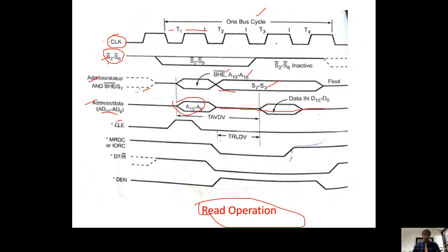ALE is important — ALE should be high during the first part of the machine cycle, i.e., during T1 time, and low for the remaining part. ALE is used along with latches to separate the multiplexed lines into pure address lines, status lines, and data lines.